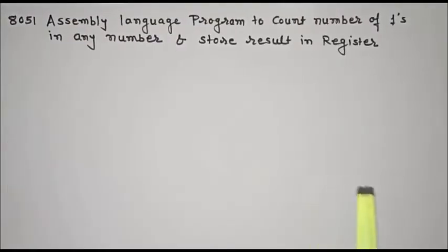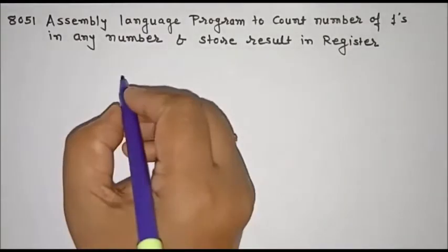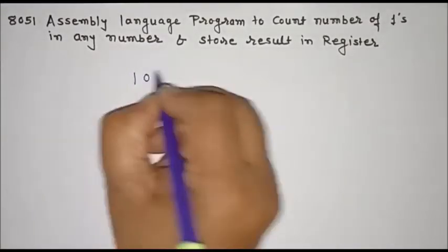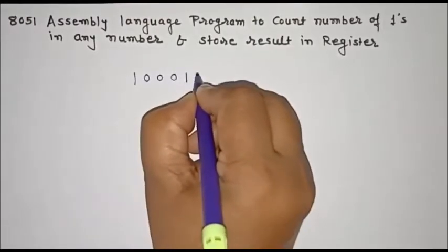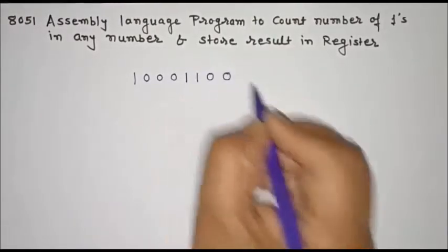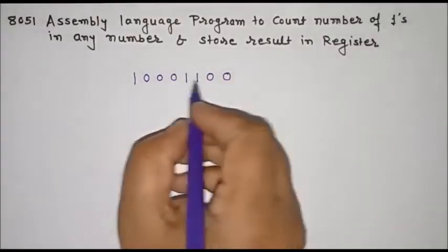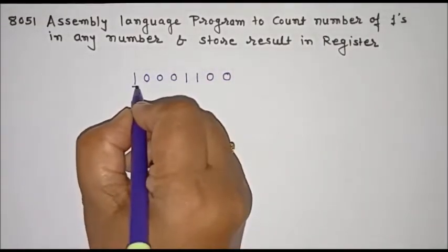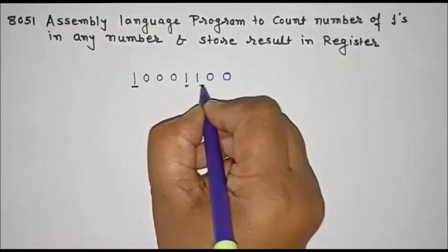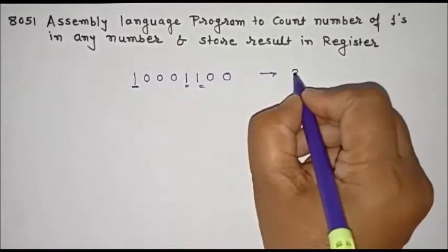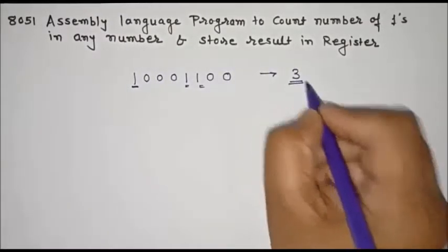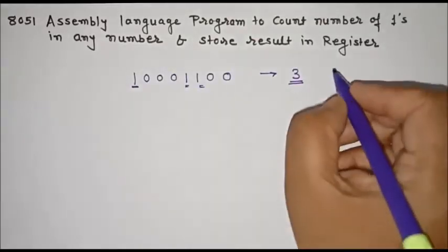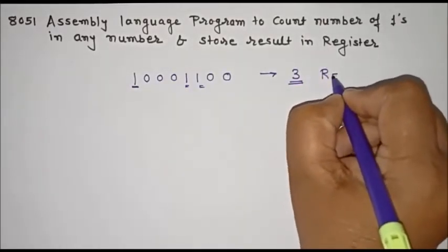This is an 8051 assembly language program to count the number of ones in any number and store the result in a register. For example, if a given number has ones at certain positions, and the count is three, the result of this program should be three, and this three should be stored in register R5.